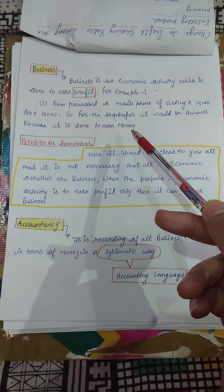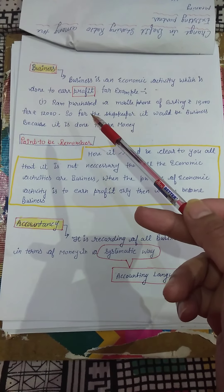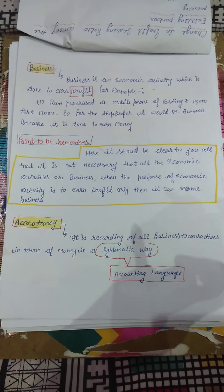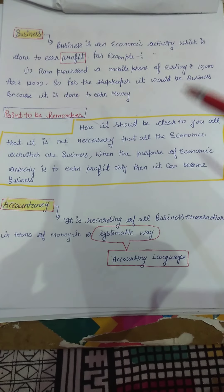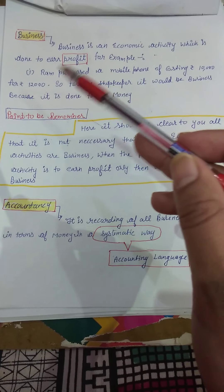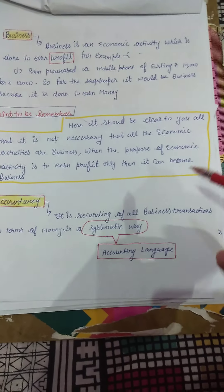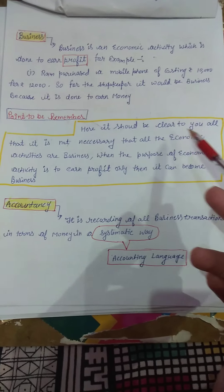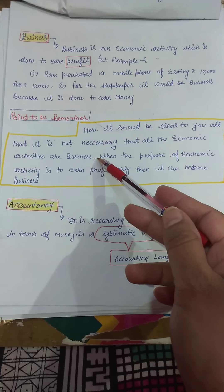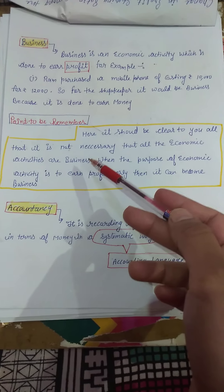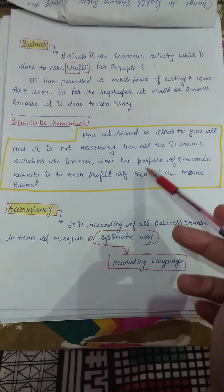For example, Ram purchased a mobile phone costing rupees ten thousand and sold it for rupees twelve thousand. For the shopkeeper, this would be a business because it is done to earn profit. The mobile was purchased for ten thousand and sold for twelve thousand — yahaan profit motive tha. So you can see that business is an economic activity.